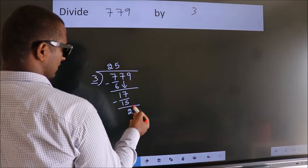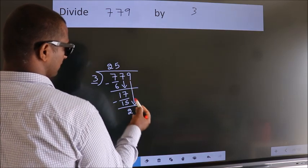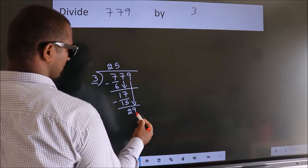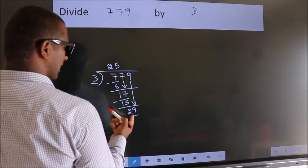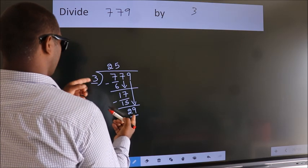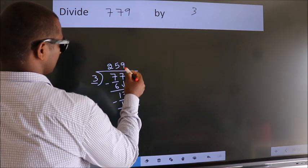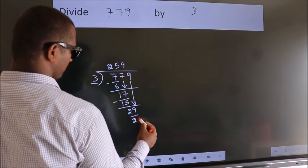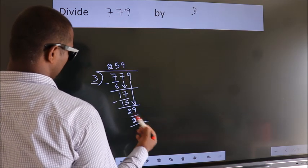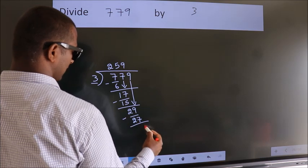After this, bring down the beside number. So 9 down. So 29. A number close to 29 in 3 table is 3 nines 27. Now we subtract. We get 2.